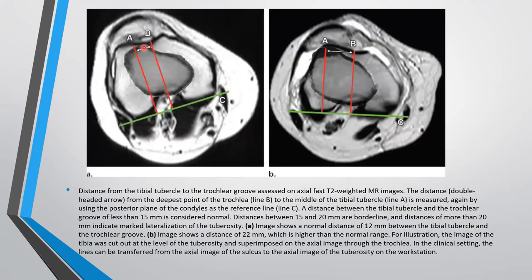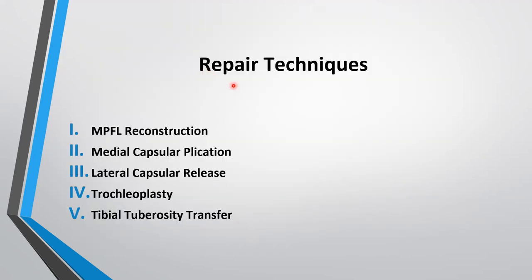Finally, TTTG: we measure the distance from the tibial tubercle to the trochlear groove on the axial fast T2 MR image. A line is drawn to the deepest point of the trochlea and to the middle of the tibial tubercle, and the distance between them is measured. If less than 15 mm, it is considered normal; 15 to 20 mm is borderline; and greater than 20 mm indicates marked lateralization of the tuberosity. Repair techniques include MPFL reconstruction, medial capsular plication, lateral capsular release, trochleoplasty, and tibial tuberosity transfers.